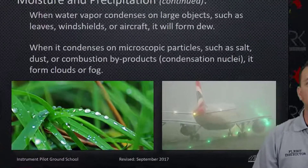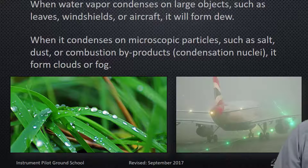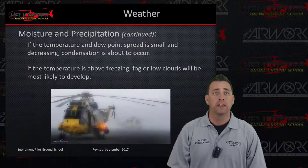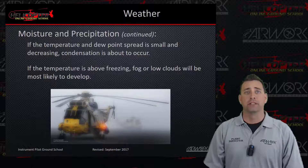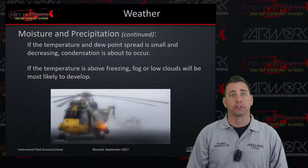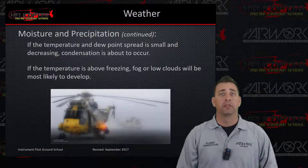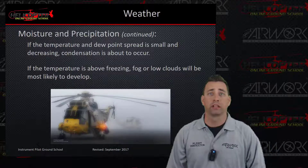When water vapor condenses on microscopic particles such as salt, dust, or combustion byproducts, it will form clouds or fog. If the temperature and dew point spread is small and decreasing, condensation is about to occur. If the temperature is above freezing, fog or low clouds will most likely develop.